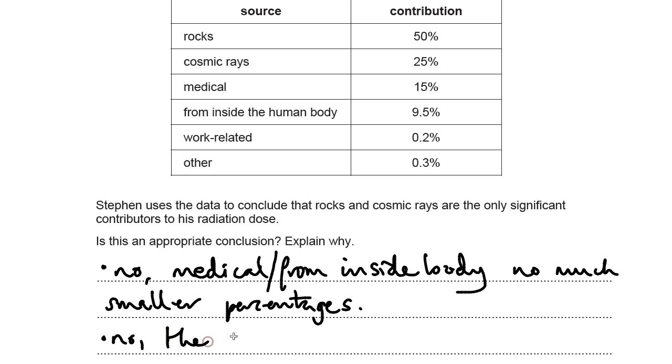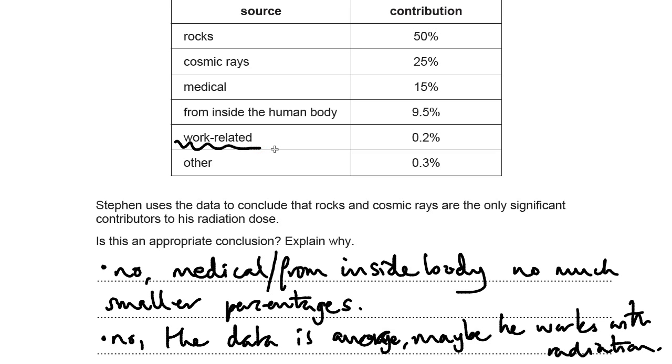So you would say no, the data is average. Maybe he works in a hospital. Or maybe he works with radiation. And there are loads of different jobs that you could put as examples of that. You could say he's a radiographer. That's the people who do the scans in hospital. You could say he works in a nuclear power station. Therefore, his work related would probably be higher. You could say he works on weapons tests. There's loads of different examples. But also, if you're particularly ill, then maybe you have more medical scans than other people. So that's another example you can say where that might be on average quite a low contribution to radiation dose. But it could still be a significant contribution.